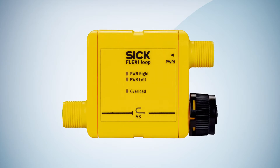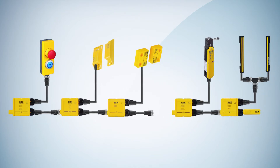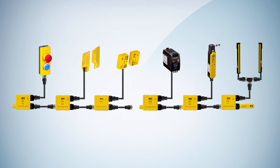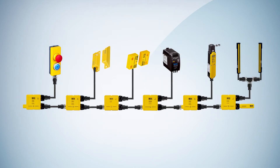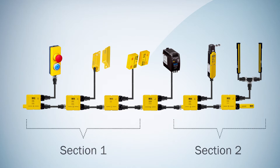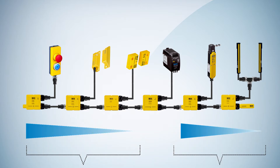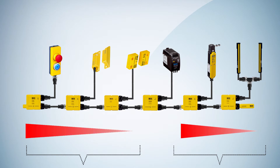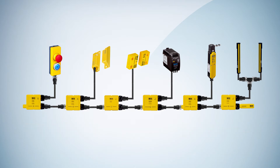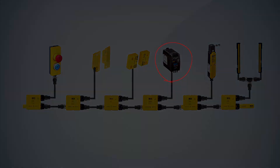Therefore, SICK offers an accessory module for FlexiLoop — the power injector — which can be added to your cascade at any point. Basically, the power injector accessory has three functions. First of all, it divides the loop into separate sections, thanks to its galvanic isolation. Moreover, it supplies the following section with power and protects it from overcurrent. Therefore, each section is then able to handle a maximum current of 4A. The power injector is connected to a 24V power supply or via a stop line directly to the cabinet.